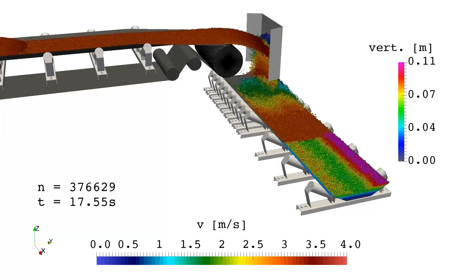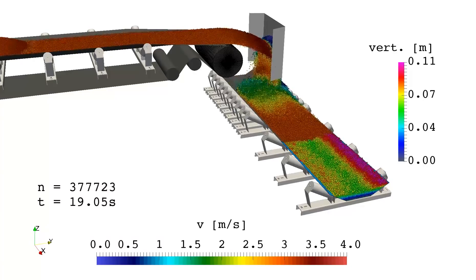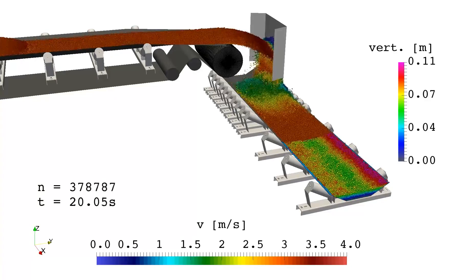A well-placed impact wall or a well-designed transfer chute is crucial for a reliable operation of a belt conveyor.